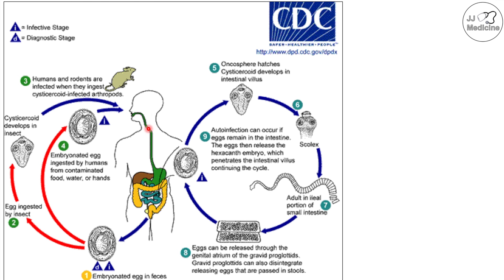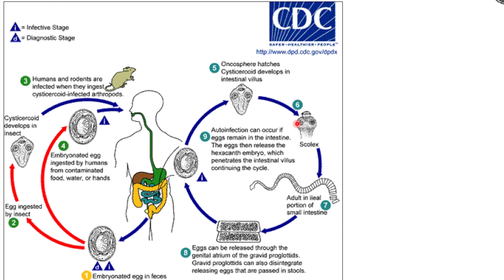What can also happen is that the patient can auto-infect themselves — they don't even need to go through the insect intermediate. They release embryonated eggs in their feces and, due to improper hygiene, ingest those embryonated eggs from contaminated food, water, or hands. Additionally, there can be internal auto-infection: when the tapeworm is adult, it releases proglottids and eggs inside the patient's intestinal tract. Those eggs can remain in the intestine, release the hexacanth embryo, which then penetrates the intestinal villus and continues the cycle, producing another adult tapeworm.